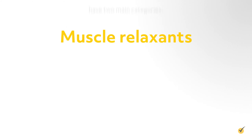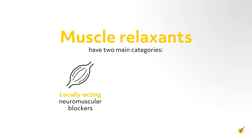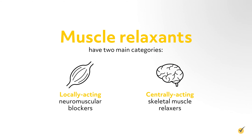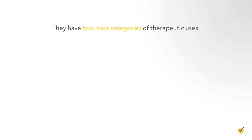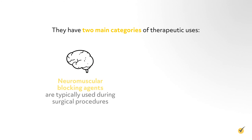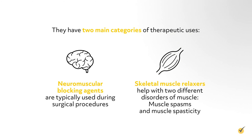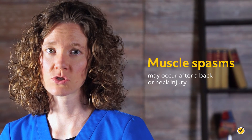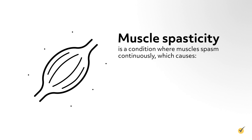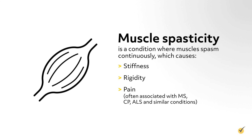So let's review. Muscle relaxants have two main categories: locally acting neuromuscular blockers and centrally acting skeletal muscle relaxers. Neuromuscular blocking agents are typically used during surgical procedures. Skeletal muscle relaxers help with muscle spasms and muscle spasticity. Muscle spasms may occur after a back or neck injury. Muscle spasticity is a condition where muscles spasm continuously, causing stiffness, rigidity, and pain, and is often associated with MS, CP, ALS, and similar conditions. Thanks for watching and happy studying.